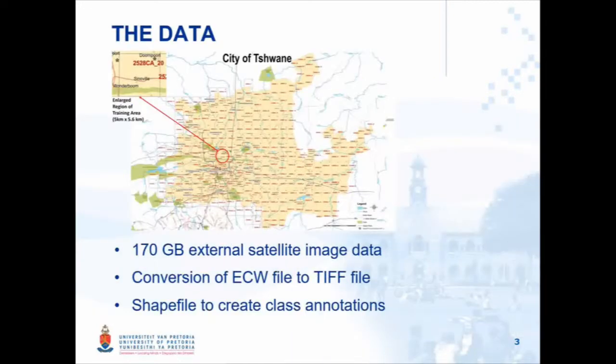A bit about the data. 170 GB of external satellite images were made available. These files were converted from enhanced compression wavelet files to tag image file formats, which allowed us to store these files as raster images. QGIS was used to create shape files which created labeled data.